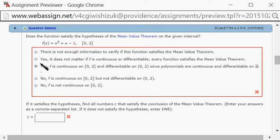Then we want to find the c value that's guaranteed by the mean value theorem. So let's do that.